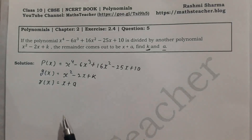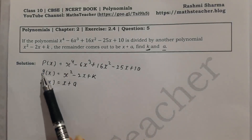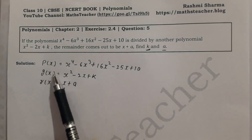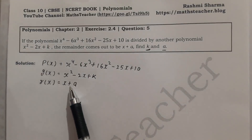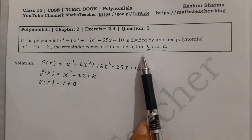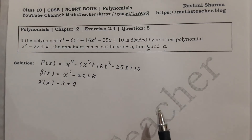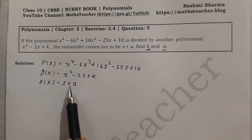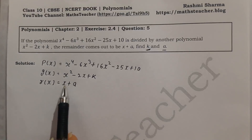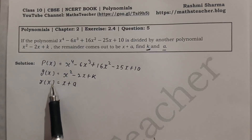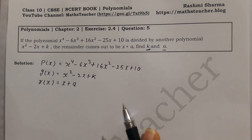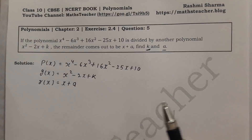We are given that when we divide one polynomial by another polynomial, this remainder comes out. So we need to find the values of k and a. What we do here is perform the division, check our remainder, and then compare it to the given remainder to find k and a.